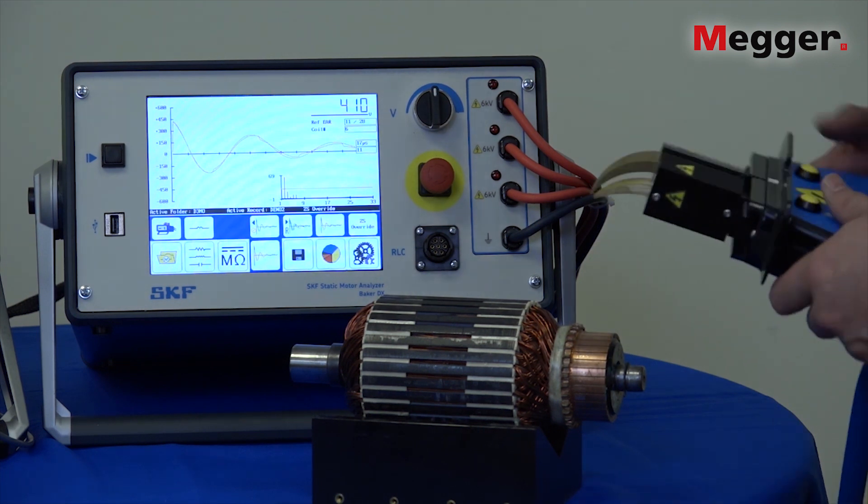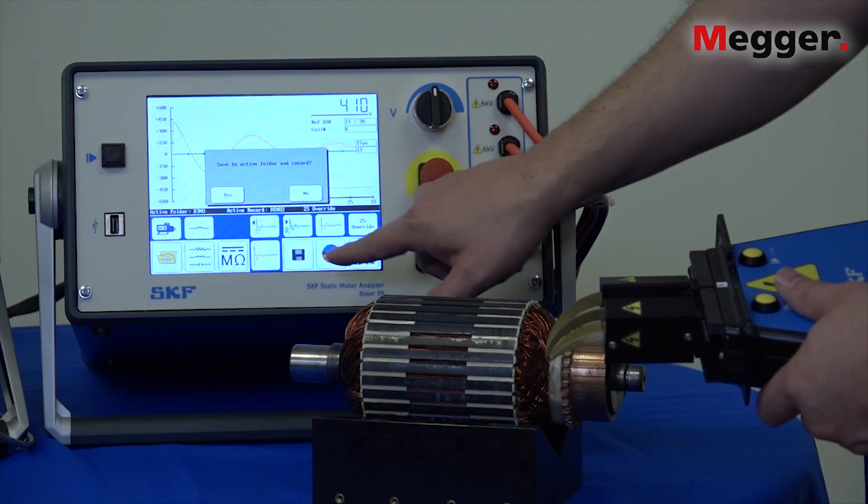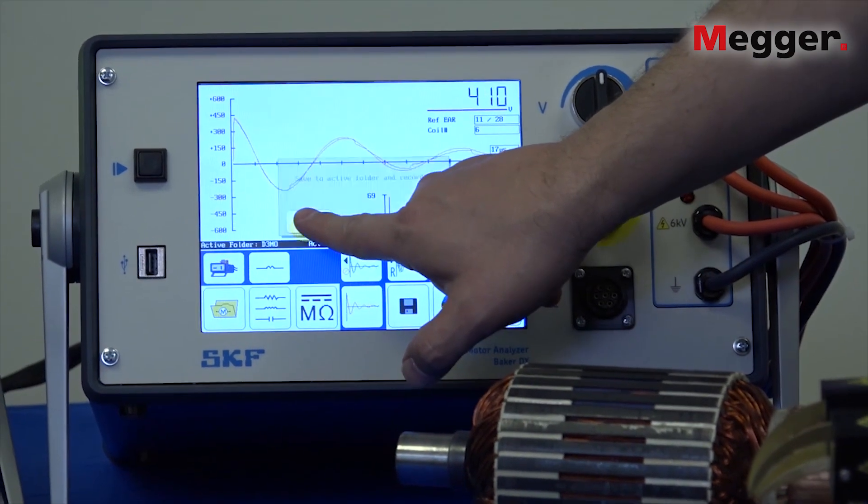Once you've completed testing the entire armature you can click the save button here and then save the record either to the active folder and record or create a new record. In this case I'll just select the active folder.